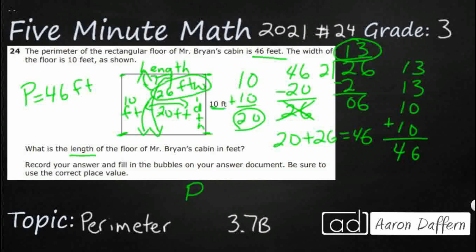The actual formula says perimeter equals two times the length plus two times W. So you could substitute: 46 equals 2L plus two times W, which is 10, and solve for L — but that's like a 6th grade skill. So that's how we solve it here. My answer is 13.